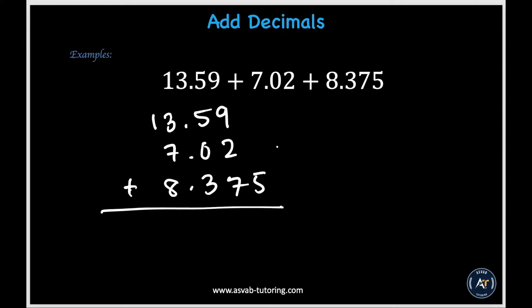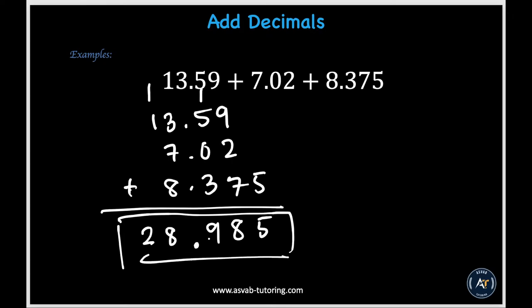In our thousandths place we only have a 5, so we put down 5. In the hundredths place, 9 plus 2 gives us 11, plus 7 gives us 18 — put down 8 and carry the 1 to the tenths place. Then 1 plus 5 gives 6, and 6 plus 3 gives 9. We put down the decimal point. In the ones place, 3 plus 7 gives 10, and 10 plus 8 gives 18 — put down 8 and carry the 1. In the tens place, 1 plus 1 gives 2. Our final answer is 28.985.